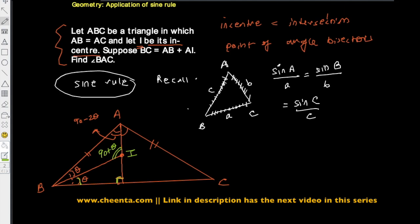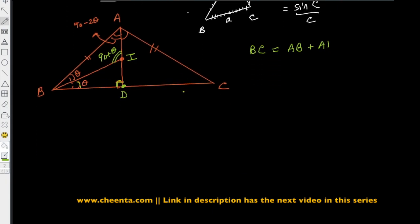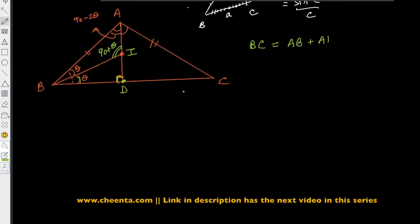So this is the setup of the problem. We are given that BC equals AB plus AI. Point D is the midpoint of BC, and AD is the angle bisector which hits the midpoint of BC since ABC is an isosceles triangle. So BC is given to be AB plus AI, and we want to find out angle BAC. There are plenty of ways of doing this problem, but we will use trigonometry just to see how it can be done.